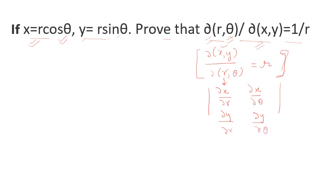Now find all four values. Partial differentiation of x with respect to r: theta is treated as constant, and differentiating r with respect to r gives 1, so we are left with cos theta. Partial differentiation of y with respect to r: the differentiation of r is 1, and sine theta is left, giving sine theta.